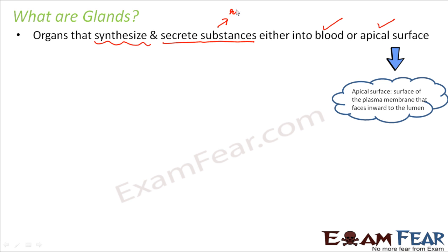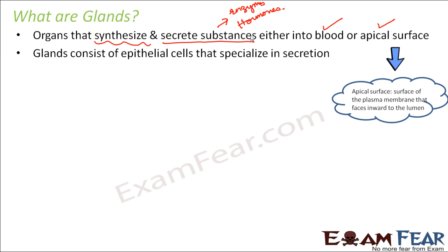Glands release enzymes, hormones, and metabolites — many kinds of chemical substances. These glands consist of epithelial cells which specialize in secretion, and that is why glands are made up of those types of cells.